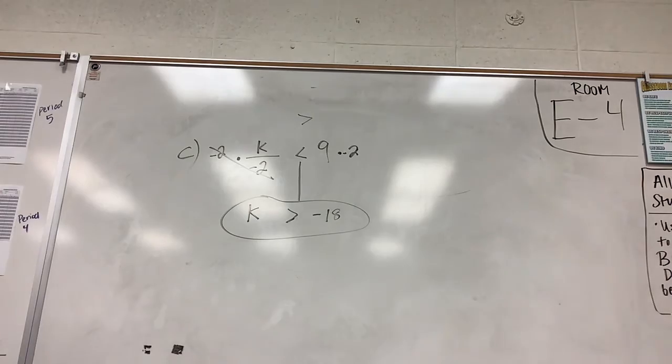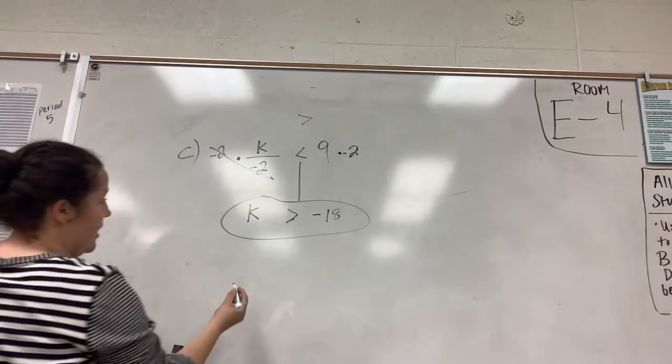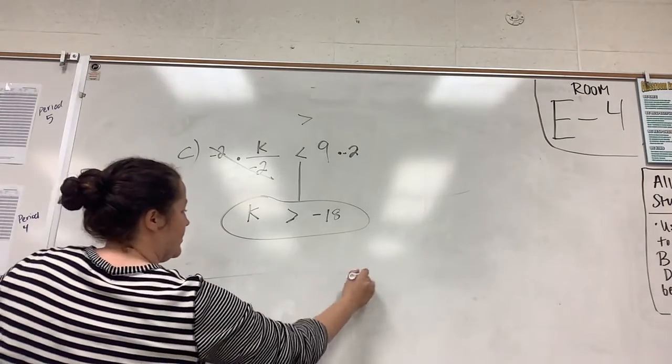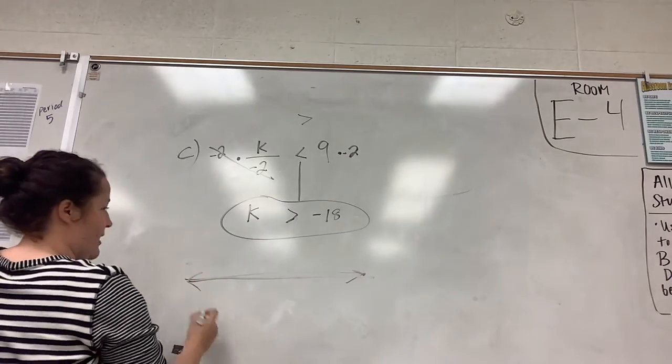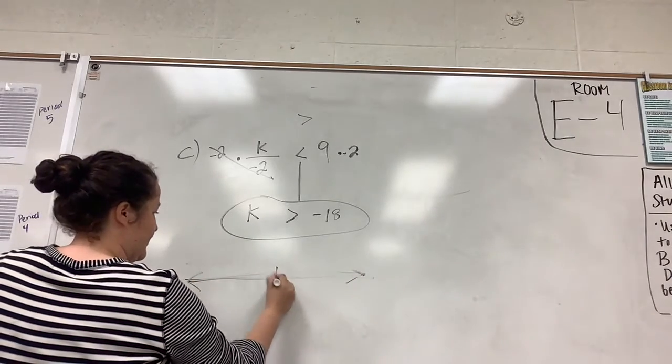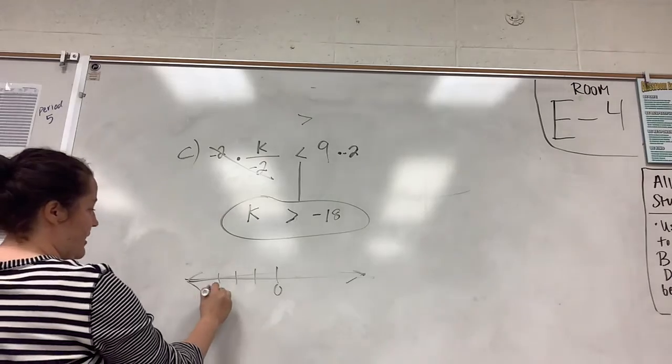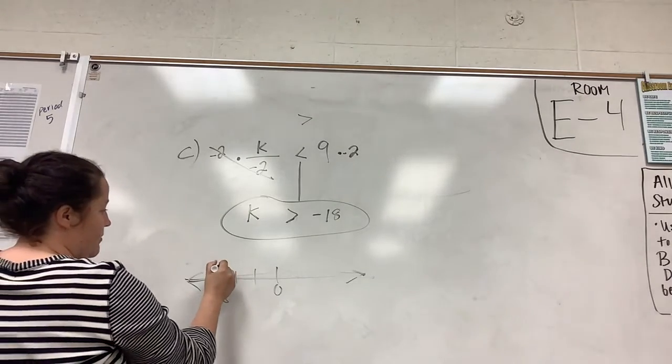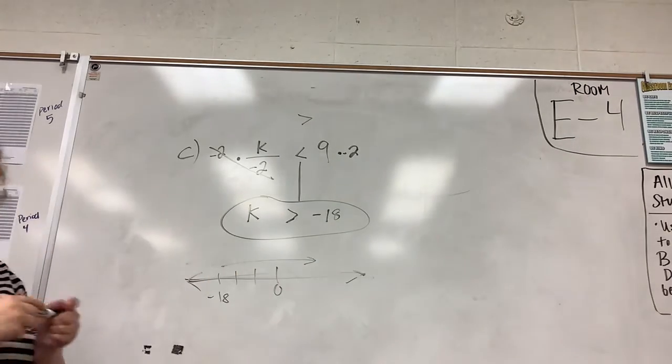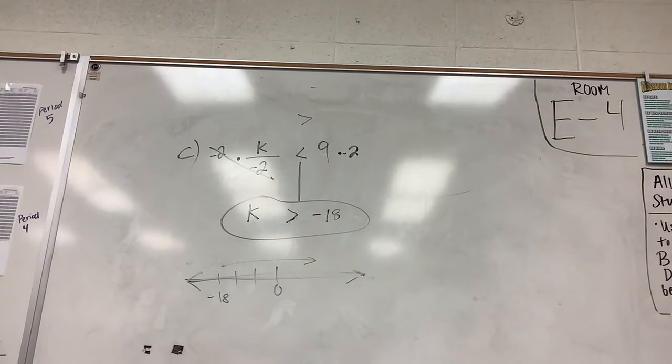And you could graph this on a number line by drawing the number line and graphing it. My pen's not very good. 0 and then so on. Negative 18, it would be greater than. But my pen's not very good, so we'll leave it there. I'll see you next time.